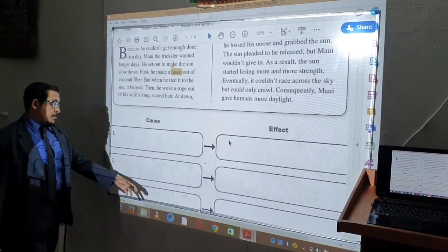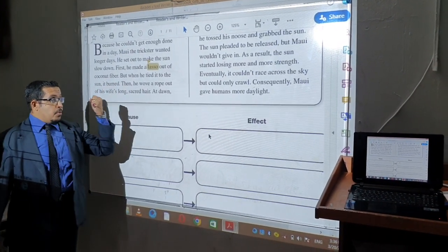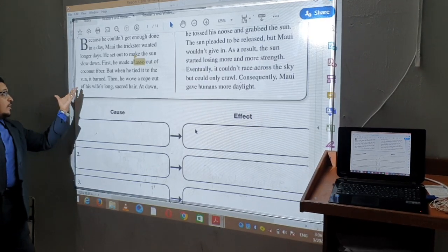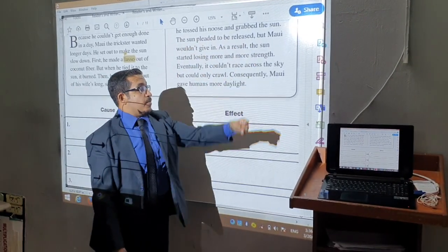In sentence number three, we wrote the cause and the effect. The cause: he made the rope and it was strong. He made it out of his wife's long sacred hair. And as a result, he grabbed the sun.